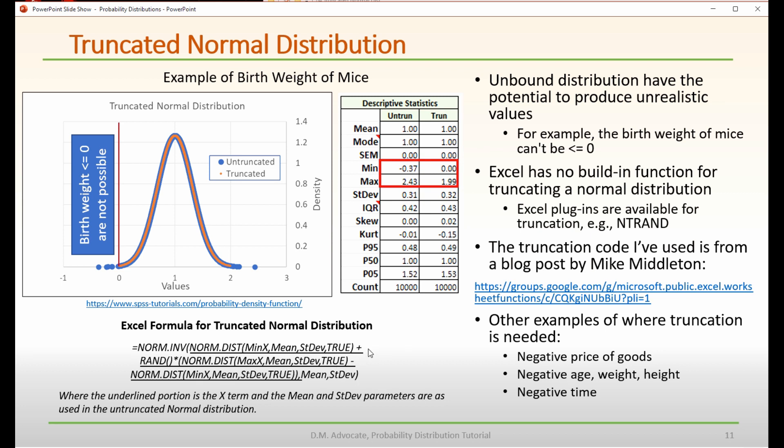The formula that you use is equal normenv and then you use the underlined portion that I show here.